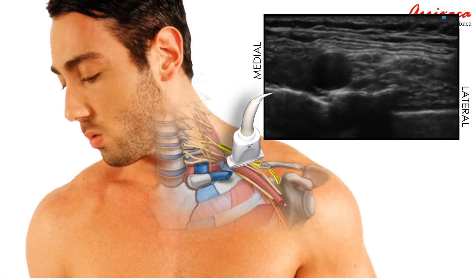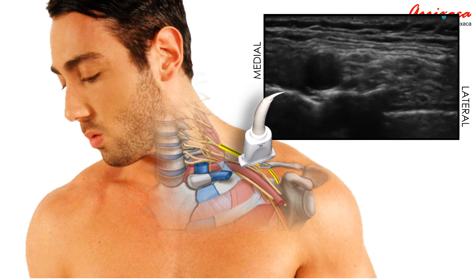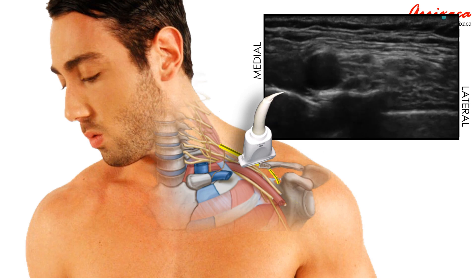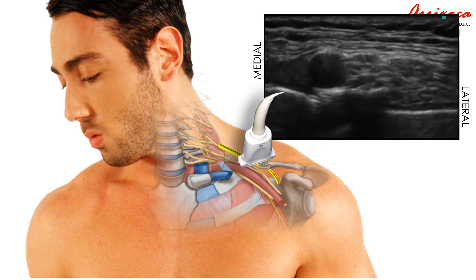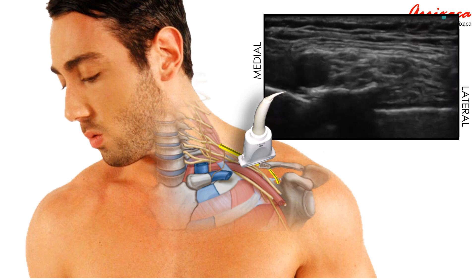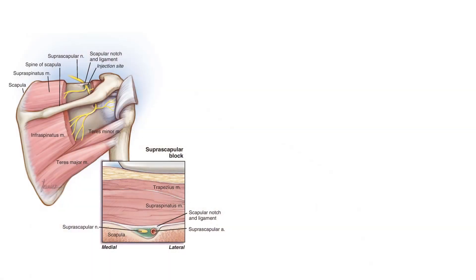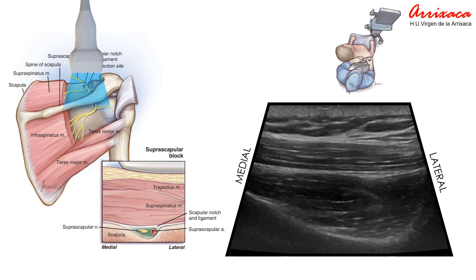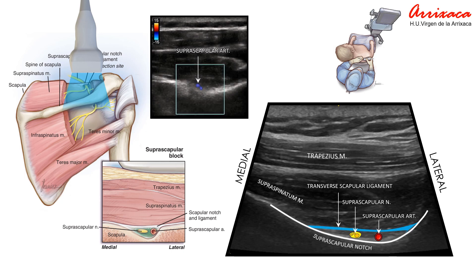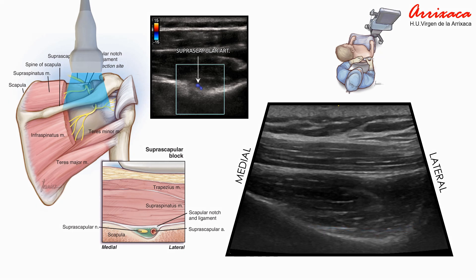The suprascapular nerve can be visualized at two different locations. Anteriorly in the neck, it can be identified in the supraclavicular fossa when separating from the upper trunk of the brachial plexus under the omohyoid muscle. On the posterior aspect of the scapula, the nerve can be identified at the supraspinatus fossa. A transverse plane of imaging is optimum for the ultrasound-guided suprascapular nerve block. In the supraspinatus fossa, the nerve is in direct contact with bone and exits the suprascapular fossa lateral to the spinoglenoid notch. With the application of color Doppler, the nerve can be visualized medial to the pulsation of the suprascapular artery as an oval or round, slightly hyperechoic structure.